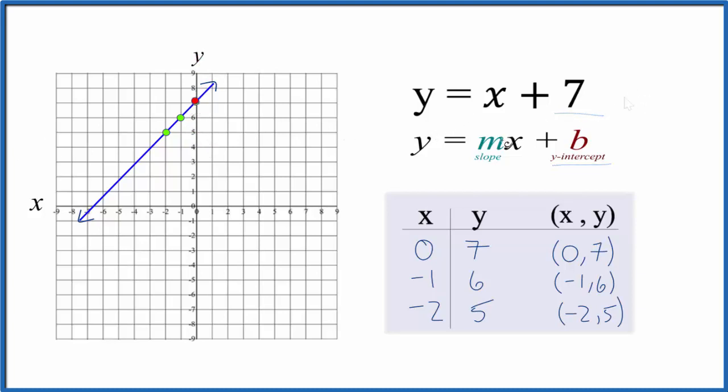We can think of the slope as rise over run. There's a 1 in front of the x here - we don't write it, but it's 1 over 1. We have rise over run, so we can go to our y-intercept, rise 1 and run 1, and you can see it's right on the line. Let's do it again: rise 1, go over 1, and that's on our line as well.